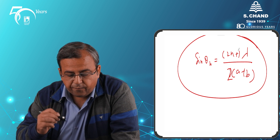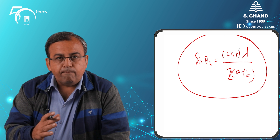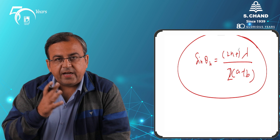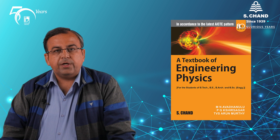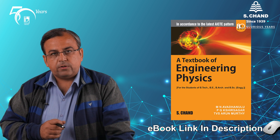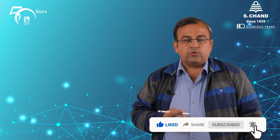We will stop the discussion here. When we move further, we will try to understand that if secondary waves are travelling in another direction — not along theta, but along theta' — then what type of maxima and minima will be observed. If you want to go more in detail about these topics, you can go to S. Chance Publishing e-book link in the description box. If you have liked this lecture, please like, share and subscribe. Thank you so much.